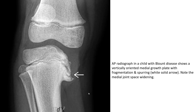Another example of Blount's disease on AP radiograph: a vertically oriented medial growth plate with fragmentation and spurring. The wide slit-like appearance indicates medial joint space widening.